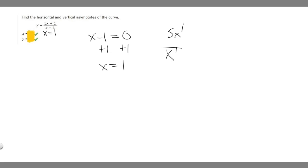When they're the same number, so this is x to the 1 and the bottom is x to the 1, you just want to look at the numbers out front and divide them. This is a 1 here, so we just do 5 divided by 1 equals 5. In this case, our horizontal asymptote is 5.